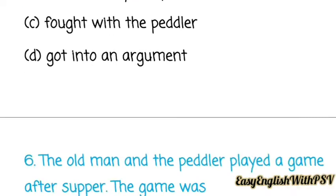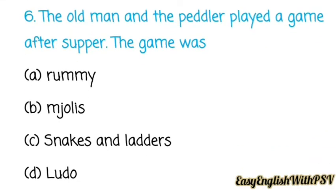Question number six: The old man and the peddler played a game after supper before sleeping — a Swedish playing card game. The options were Rami, Mjolis, Snakes and Ladders, or Ludo. The correct answer is Mjolis.